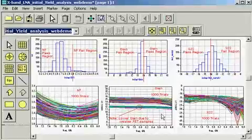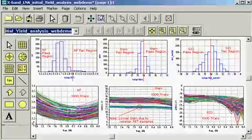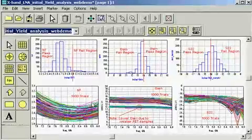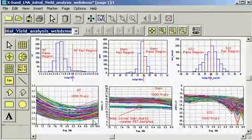In the data display, we have two types of plots. The bottom plots display the actual response for noise figure, gain, and S22 of all of the 1000 trials that we ran.